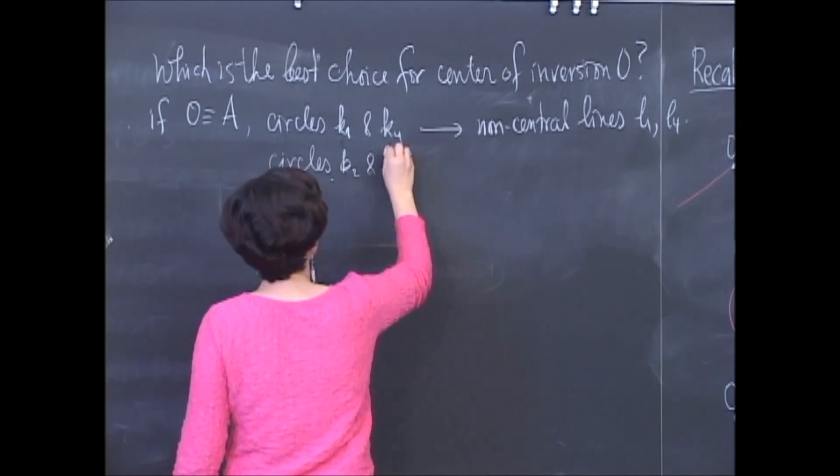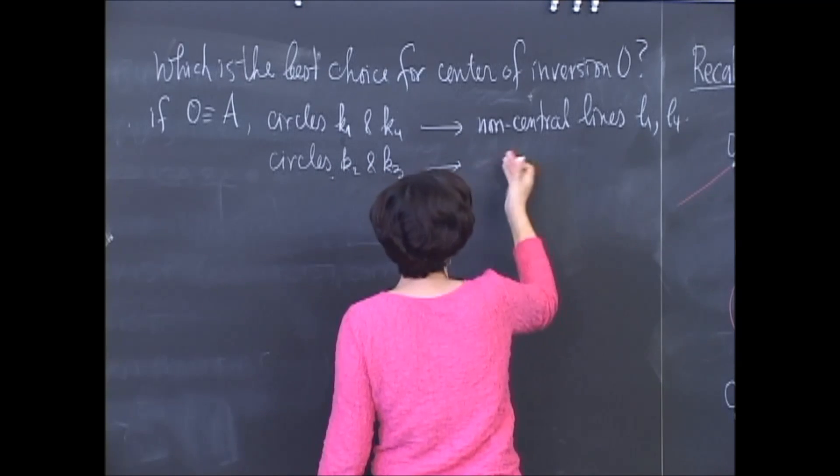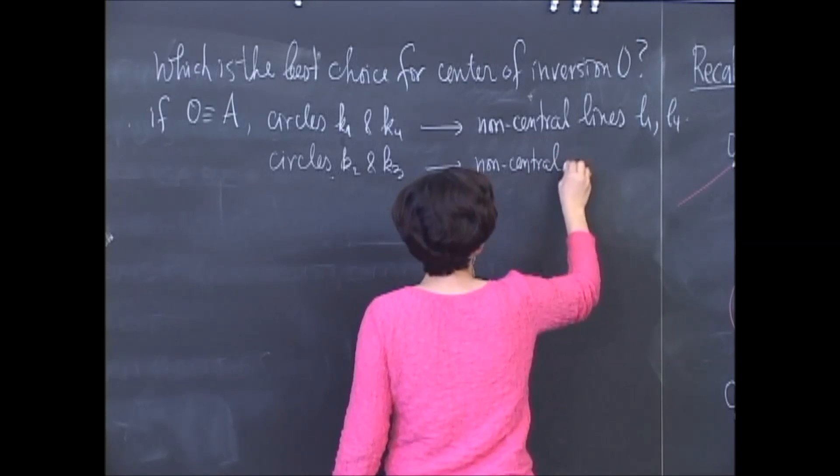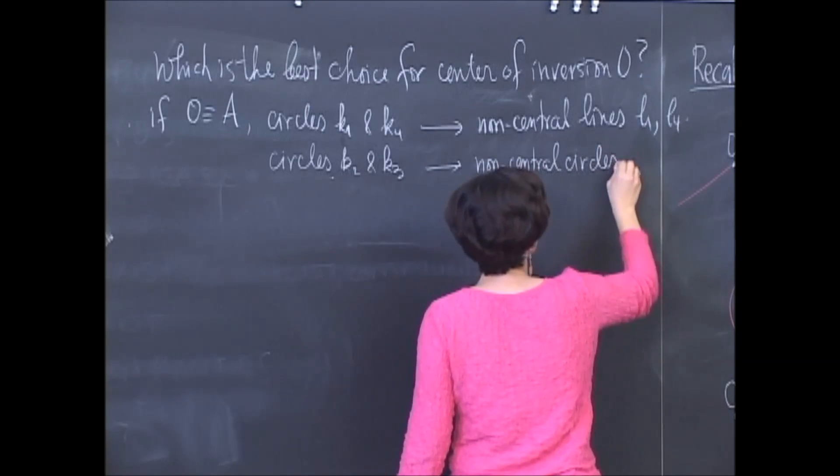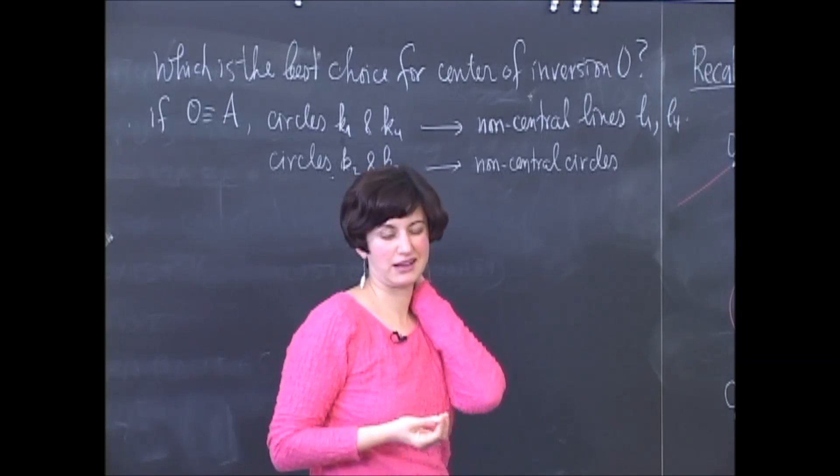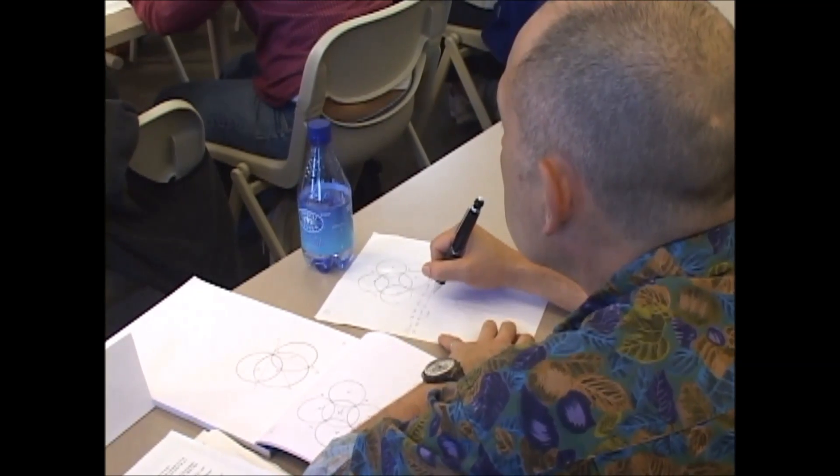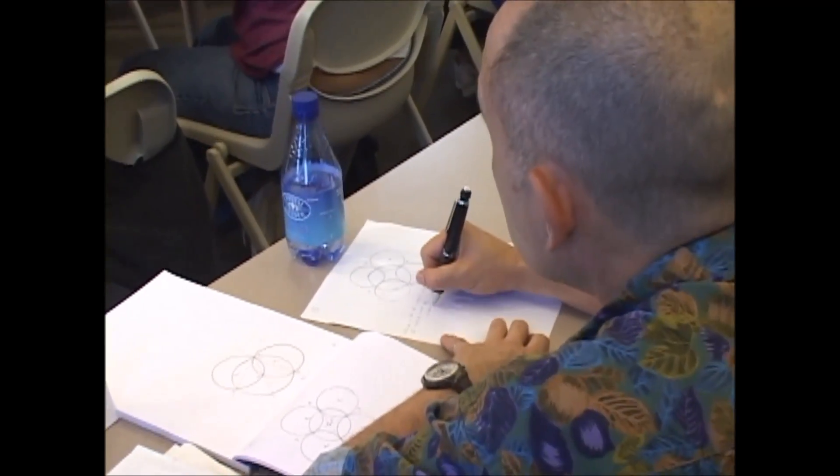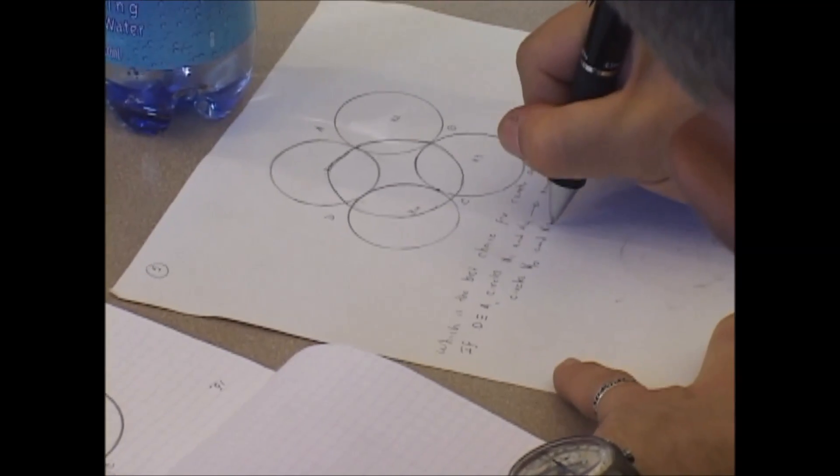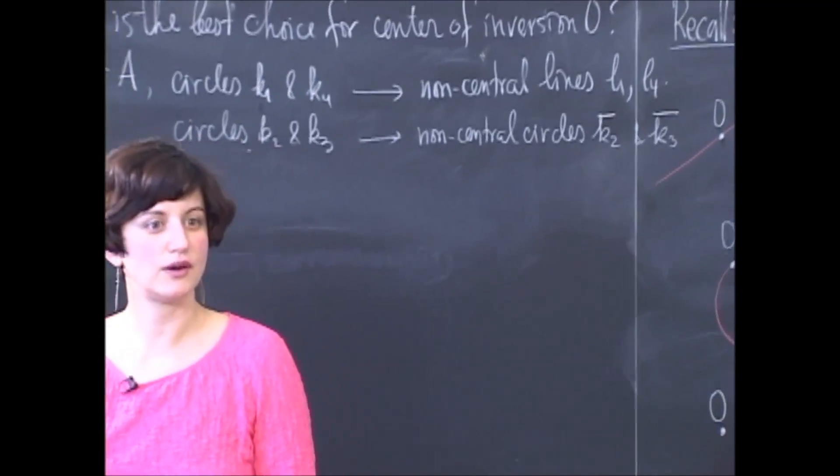So let's write this down. Circles K2 and K3 go into some other non-central circles. And let's call them, I shouldn't call them L2 and L3, because L kind of stands for a line. So let's call them K2 bar and K3 bar.